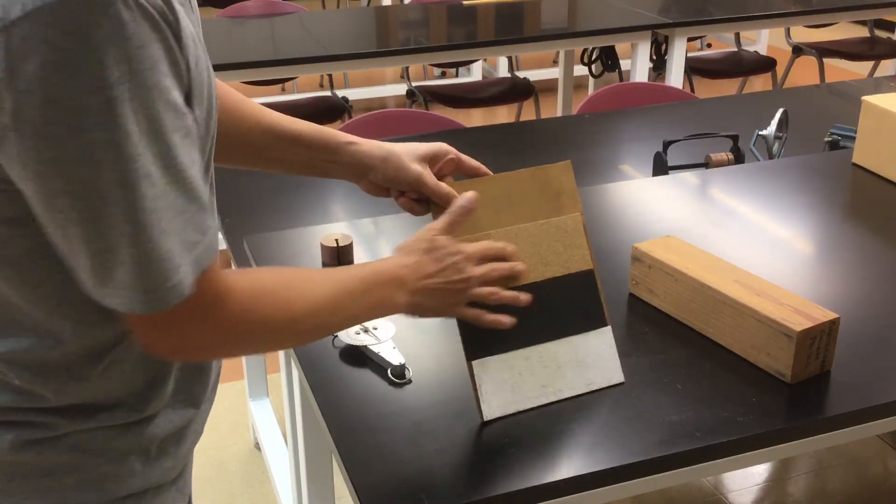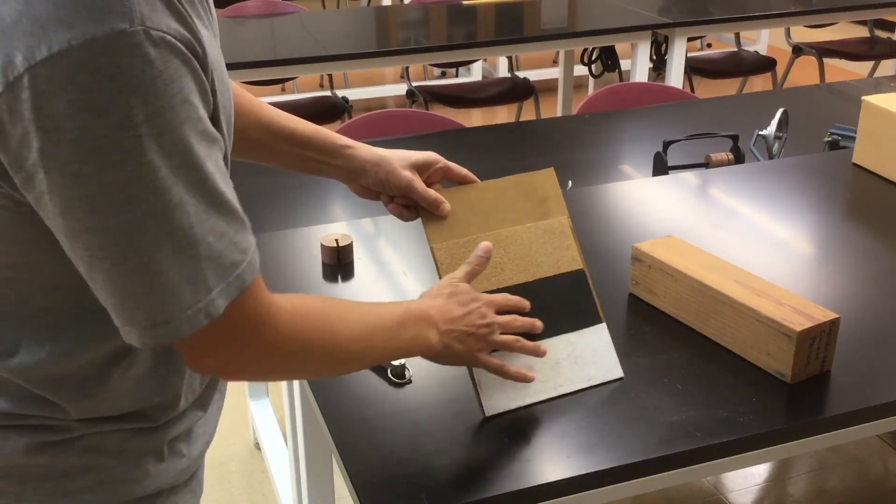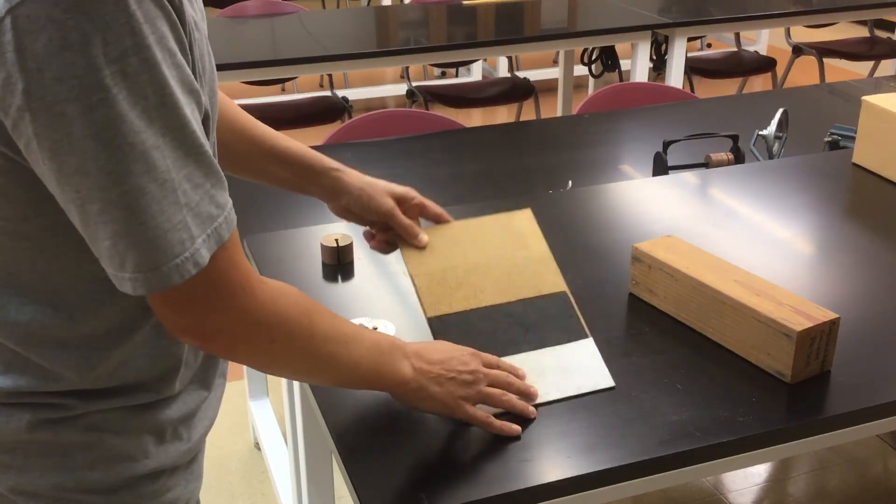Here I've got fiberboard, cork, some kind of rubber, and then something like sandpaper or grip tape.